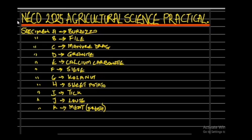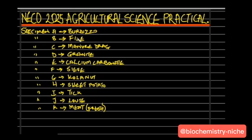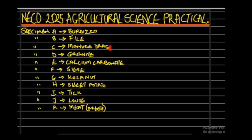Welcome once again to our YouTube channel. Thanks for subscribing. We want to look at the NECO 2025 Agricultural Science practical and the specimens that NECO has chosen for this year's examination. The specimens listed are: Specimen A - Burdizzo, B - File, C - Manual Drag, D - Granite, E - Calcium Carbonate, F - Sieve, G - Kola Nuts, H - Sweet Potato, I - Tick, J - Louse, and K - Meat.